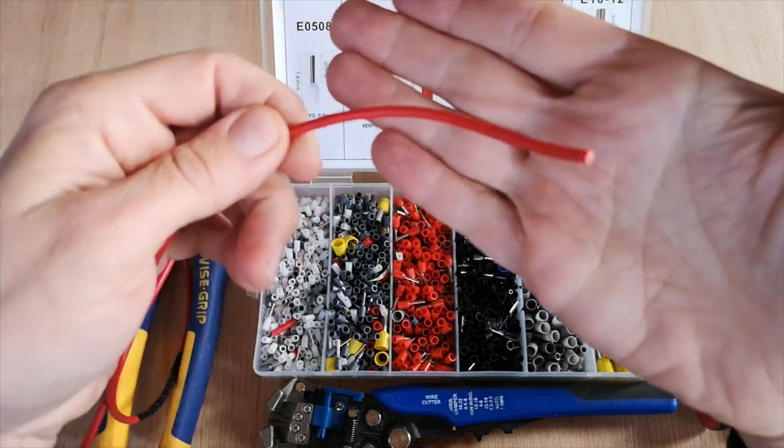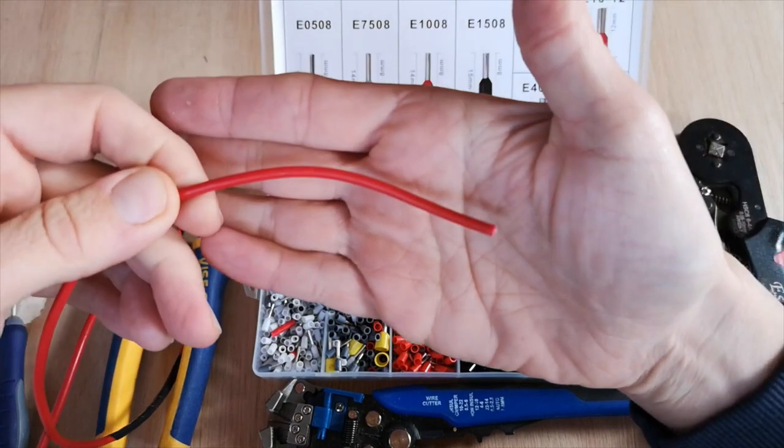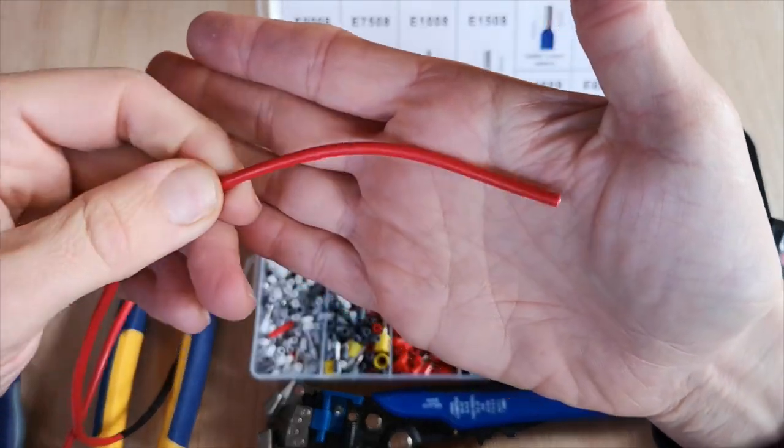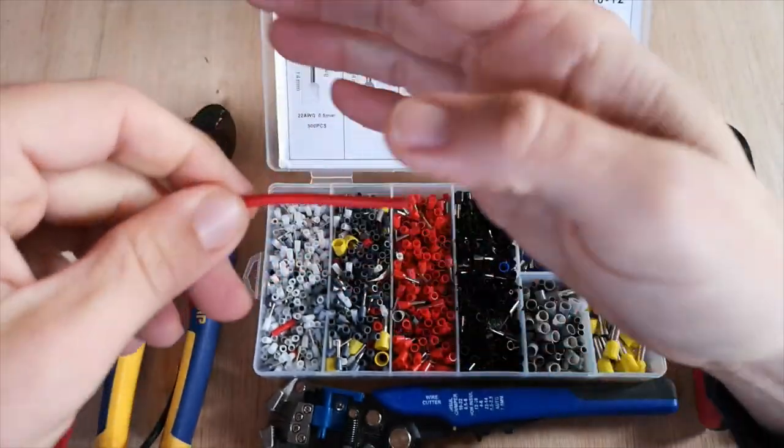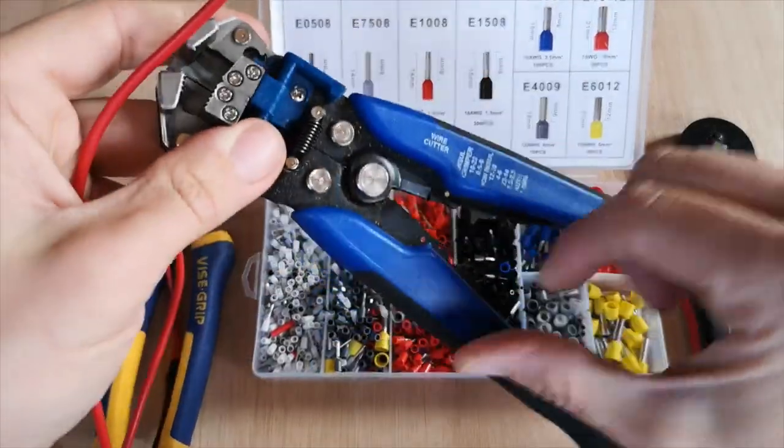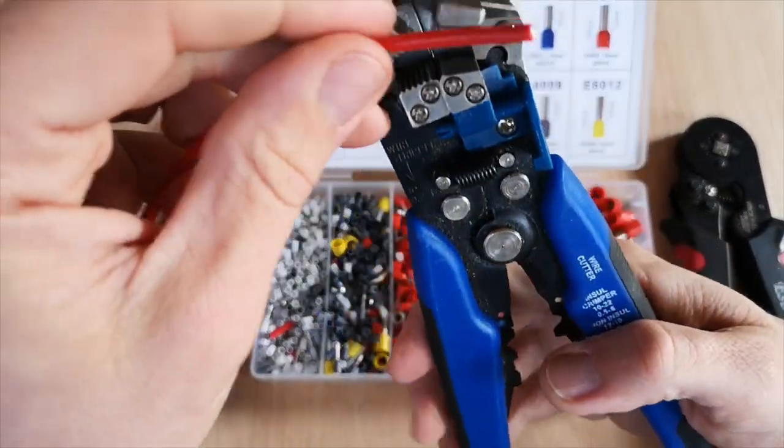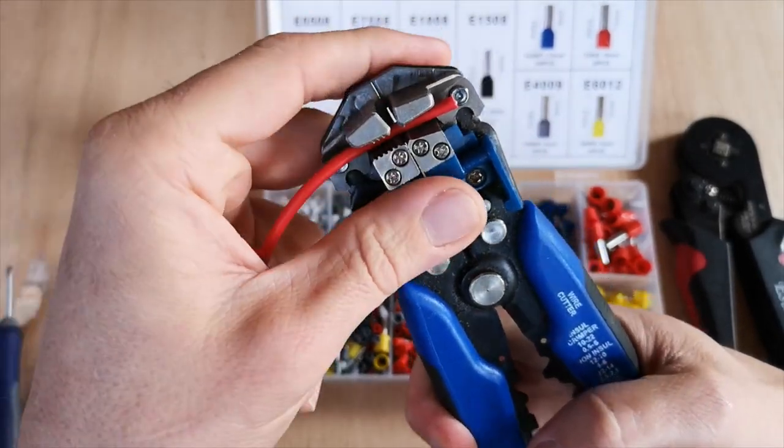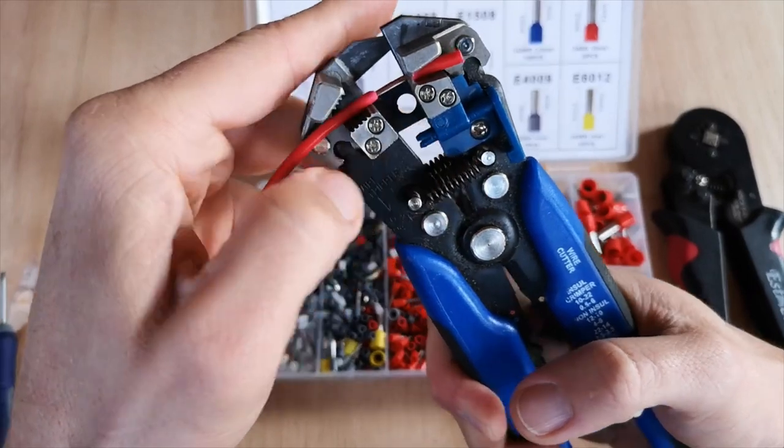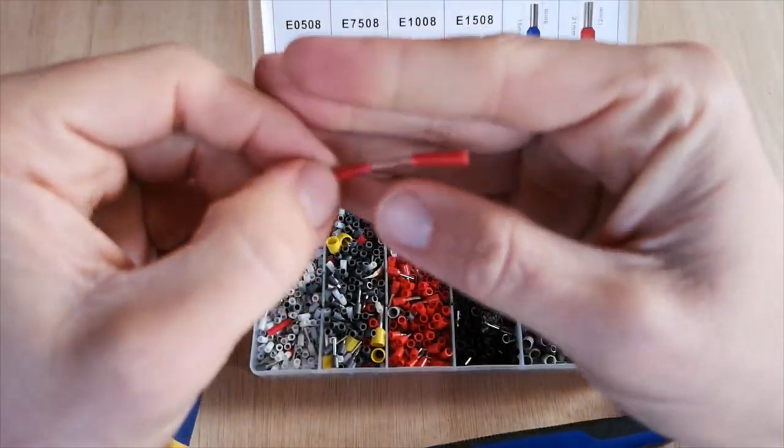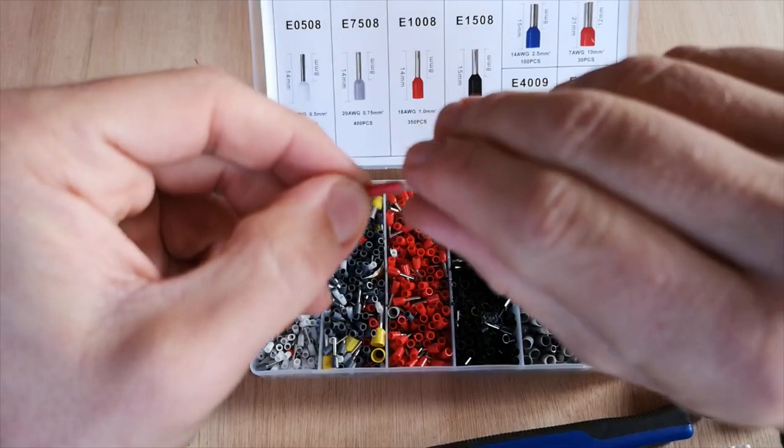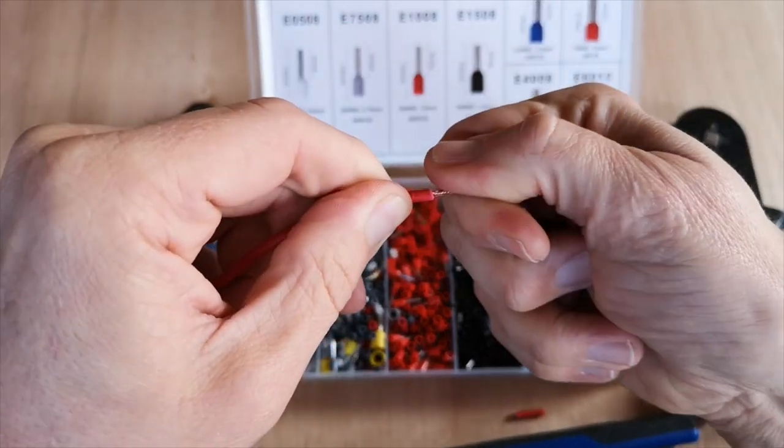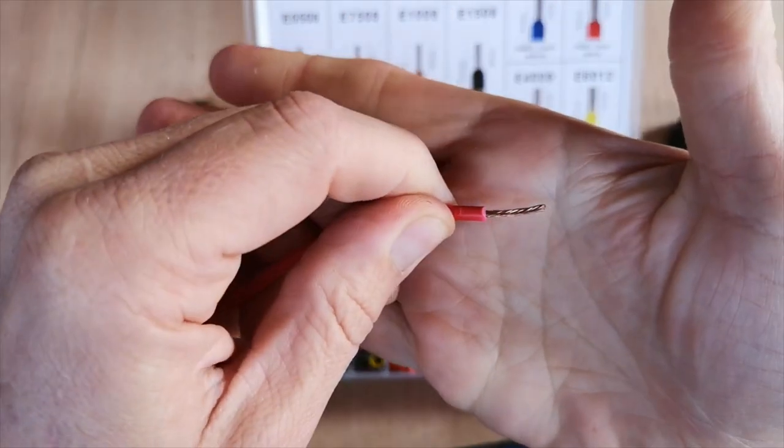First of all we take our cable, in this case it's 1.5mm square. We're going to strip back the insulation from the cable, revealing those strands within. Using our wire stripping tool, twist up those cable strands ready to feed on the ferrule.